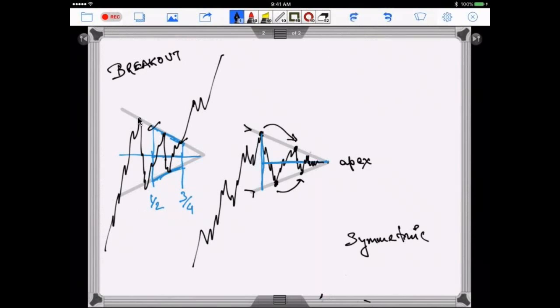Now this pattern is also called the coil. Have you seen a spring, something round shaped? This pattern is called a coil because if you take a spring and squeeze it hard, and when you release it, it snaps out forcefully. Same way, when it's a symmetric triangle breakout.